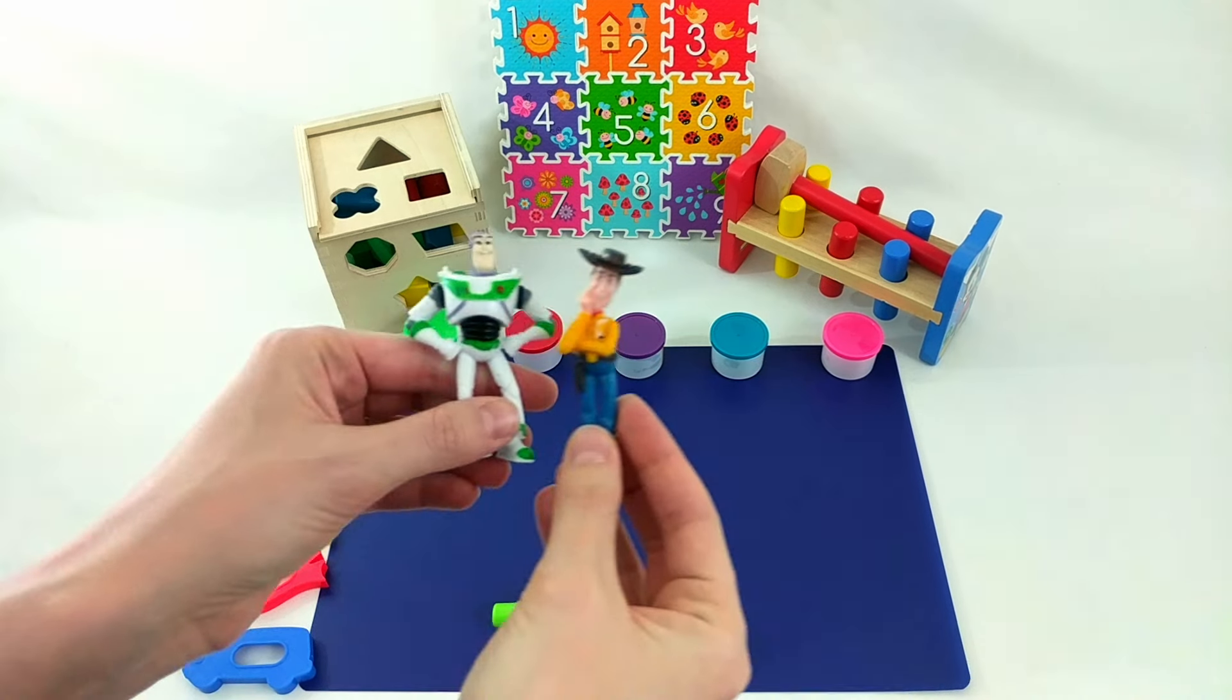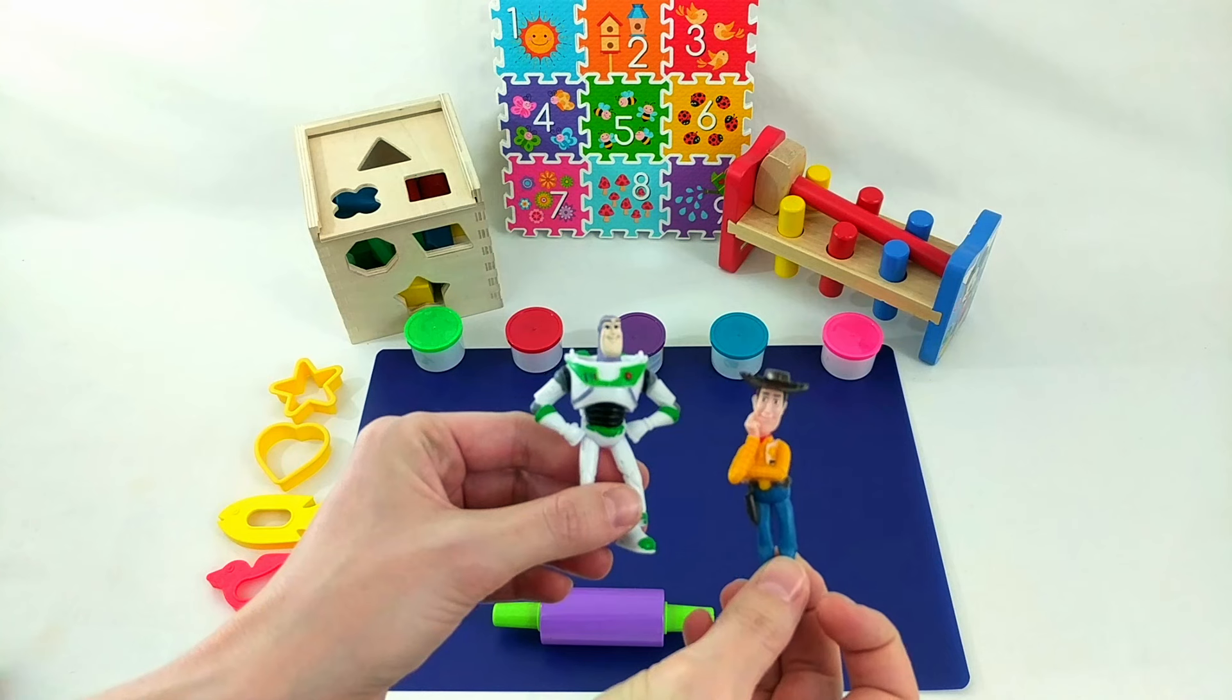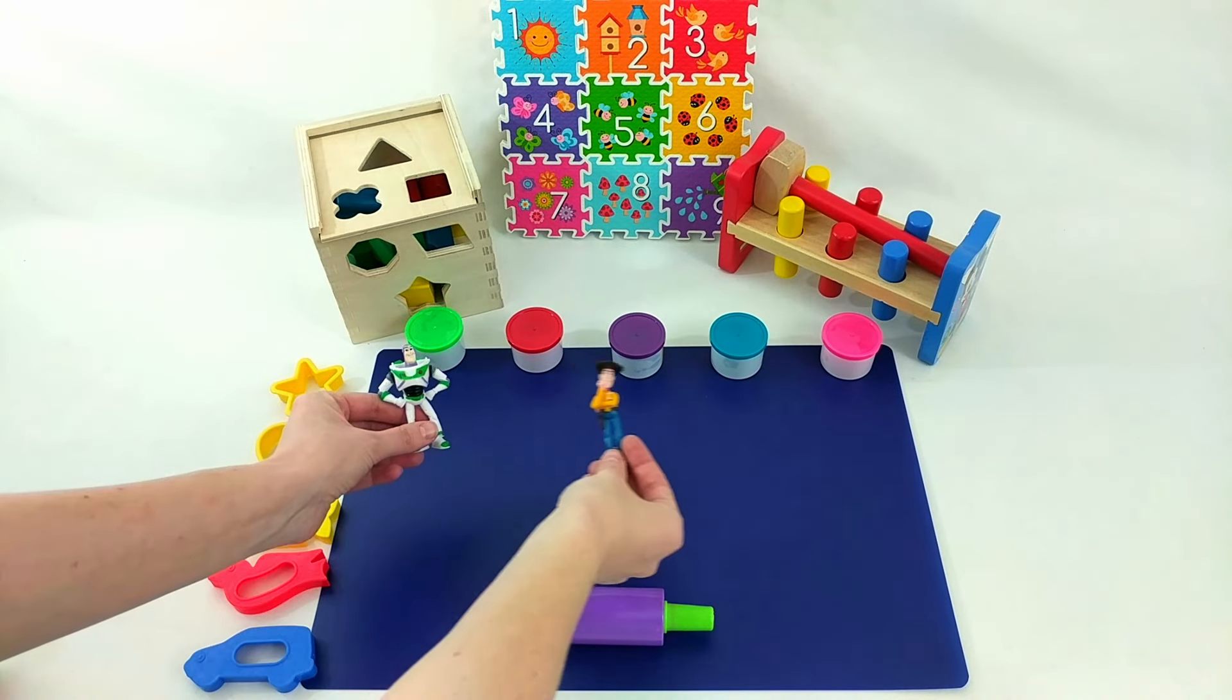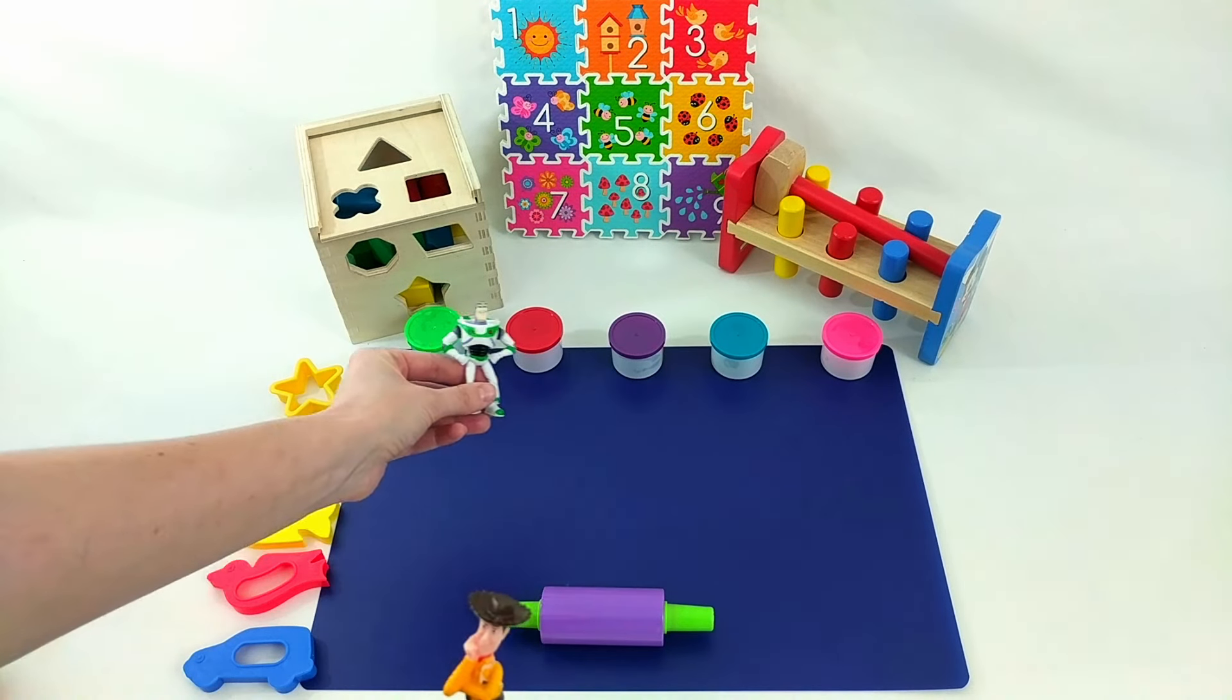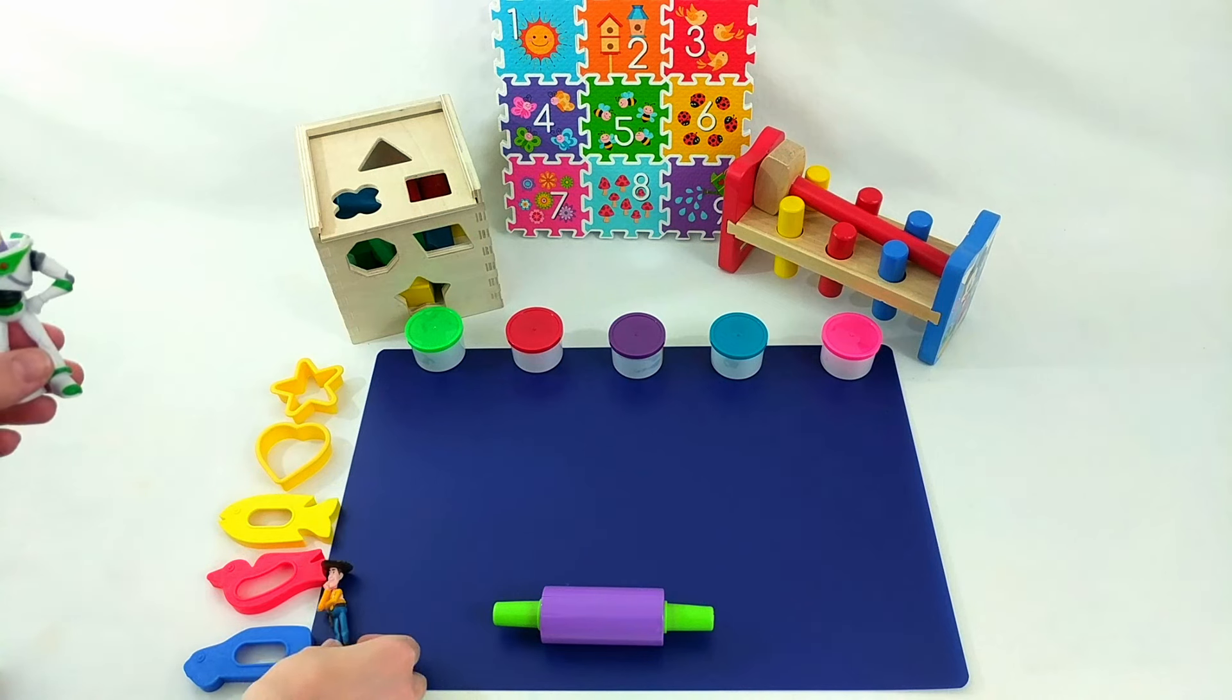Okay, it's time to play with Play-Doh. Buzz and Woody are here to help us. We're gonna make different shapes from different colors of Play-Doh. Buzz is gonna choose what color, and Woody is gonna choose which shape. Let's get started.